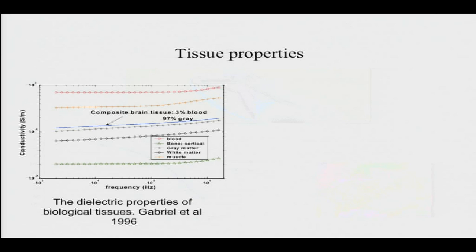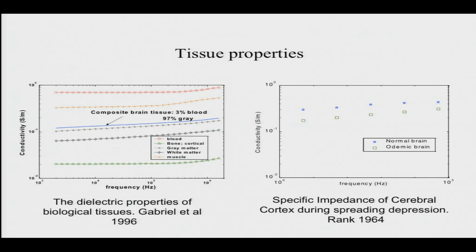Tissue properties are well known — this is work from Gabriel. In the early 1960s to 70s, bioimpedance was quite in fashion. Then optical tomography came along and it's a very popular area, but there's the depth of penetration issue and scattering on the inverse side. So now the bioimpedance side is coming back. In the brain, we can see the distinguishability between blood, bone, gray matter, white matter, and muscle. These parameters show there are clearly distinguishable tissues that could be imaged. Going back to Ranck's work from 1964 on cerebral cortex and spreading depression — spreading depression is really an animal model but is believed to be similar to migraine.